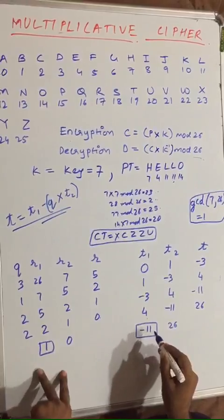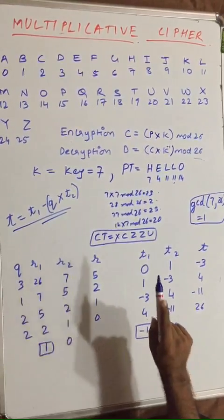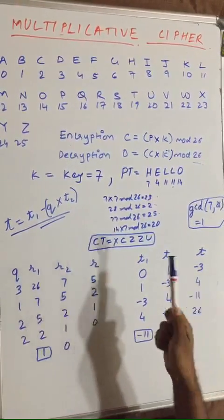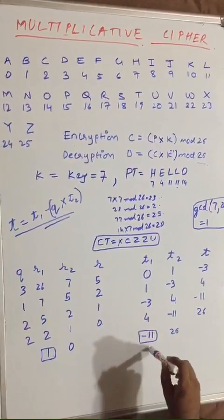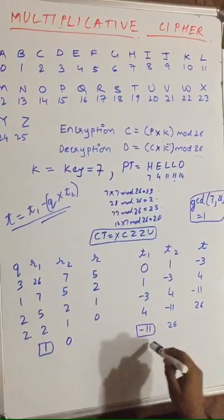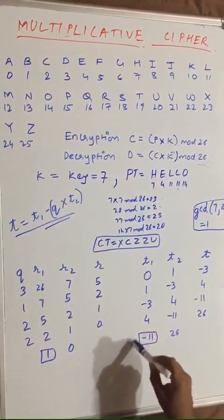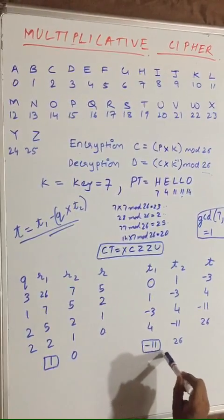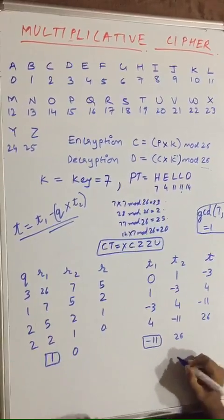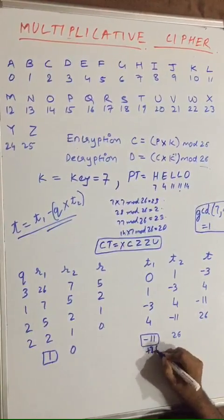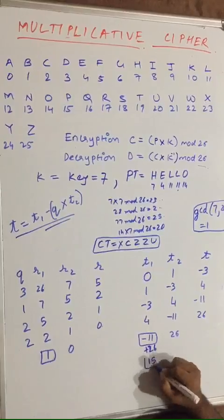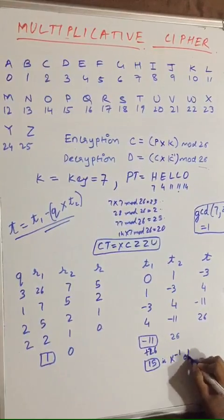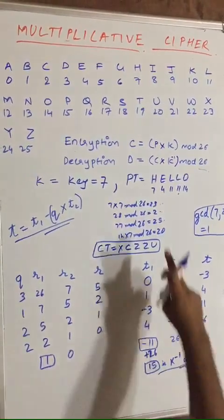This means −11 is the multiplicative inverse of 7, but we cannot use a negative value in the decryption algorithm. Using the concept of additive inverse, we add the domain value to the negative result: −11 + 26 = 15. So 15 is the multiplicative inverse of 7.